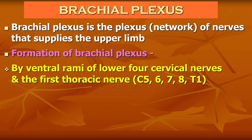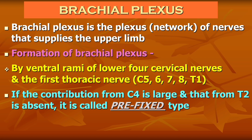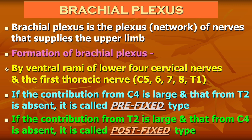There is a little contribution from the C4 and T2 spinal nerves. Depending on this contribution, there are two types of the brachial plexus. If the contribution from C4 is large and that from T2 is absent, it is called the prefixed type. If the contribution from T2 is large and that from C4 is absent, it is called the postfixed type of the brachial plexus.